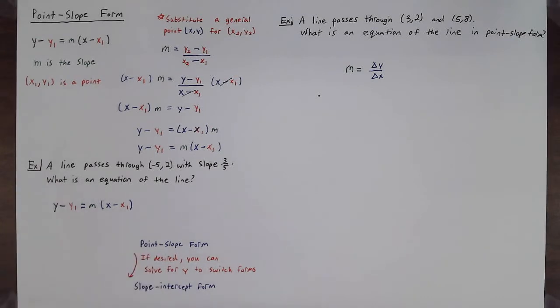For our first example we're to find a line that passes through the point negative five, two with a slope of three-fifths and it says what is an equation of the line. We're going to use point-slope form.